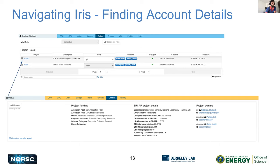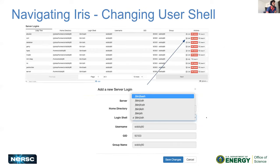Another helpful thing to know is if you want to get access to a project, you can reach out to the PI or the PI proxy. Also, if you want to change shells — maybe you don't like the default bash shell — you can go into IRIS, click edit on the server login for the system you want to change, select the shell, save the change, and wait a few minutes. Your shell should automatically change.